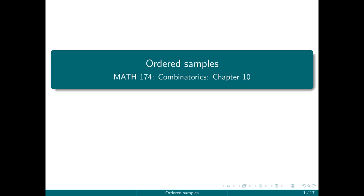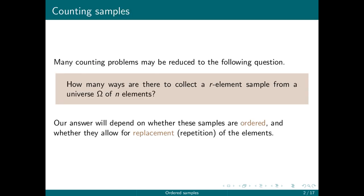We're going to continue talking about combinatorics by now talking about ordered samples. Many counting problems can be reduced to the following question: How many ways are there to collect a sample of R elements from a universe omega of N elements? Our answer depends on whether these samples are ordered and whether they allow for replacement, also called repetition. This first set of slides will deal with ordered samples.